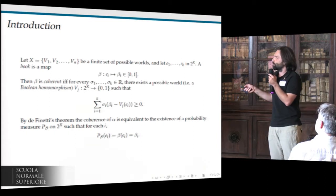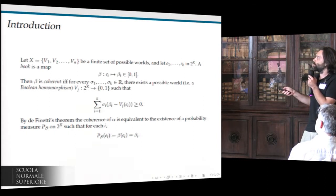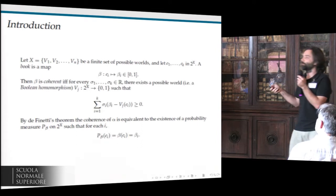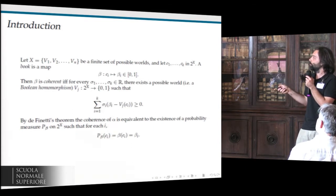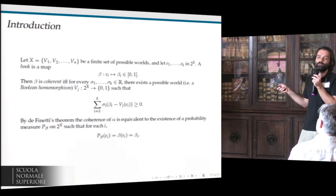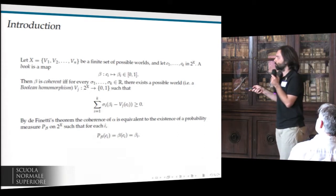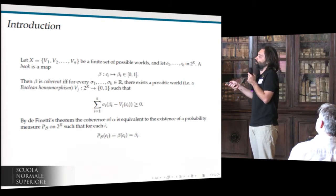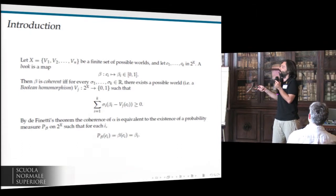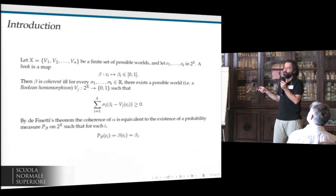To formalize the situation: we have a finite set of possible worlds V1 through Vn. Events are just subsets of possible worlds, as usual. And the book is a map that assigns to every event E_i a real number beta i between zero and one.